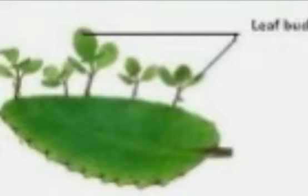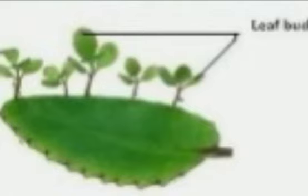Take page number 16 in your science book. Growing plants from leaves — how do new plants grow from leaves? Bryophyllum leaf is given as an example. This is a Bryophyllum leaf. It has many buds on its margin. New plants arise from these buds when the buds fall on moist soil. In this method, new plants grow from leaves.